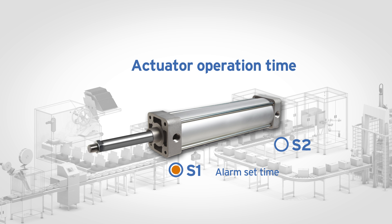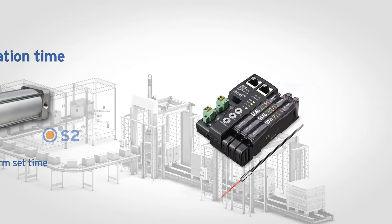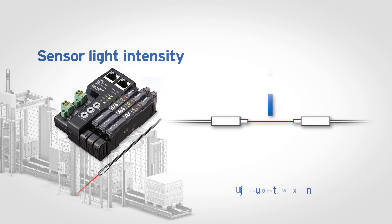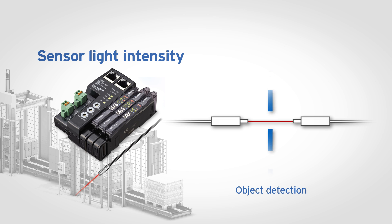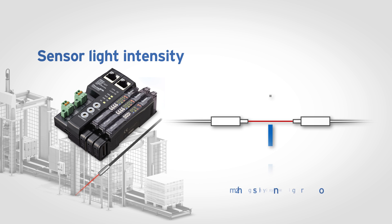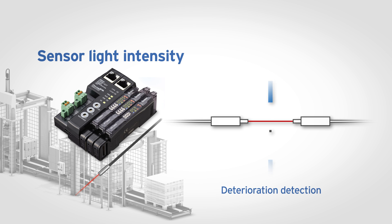The cylinder operation time is measured against a normal operation range, informing if the time exceeds or is lower than this value. The fiber sensor light intensity is monitored for deterioration to detect build-up of dust or other materials.